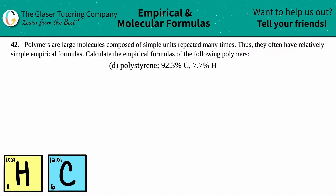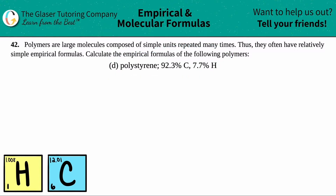Number 42. Polymers are large molecules composed of simple units repeated many times, and they often have relatively simple empirical formulas. Calculate the empirical formula of the following polymer. In this case, we have to find out the empirical formula for polystyrene, which consists of 92.3% carbon and 7.7% hydrogen.